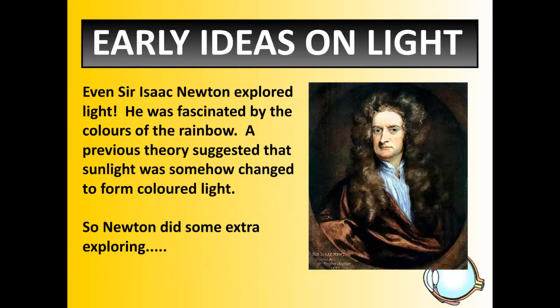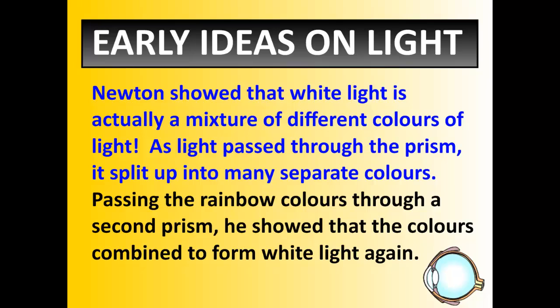Isaac Newton, another very famous scientist, dabbled a little bit with gravity but was also fascinated by the colors of a rainbow. There was a theory suggesting that sunlight was somehow a changed form of colored light. Newton, being the scientist that he was, looked at sunlight and thought — but it's white, so how is this color? The story is that light came through his wall and struck a piece of glass, projecting a rainbow on the bench or wall beside him, which got him thinking about how sunlight could contain all these different colors. He showed that white light is actually a mixture of different colors, which we see when we place a crystal or prism in front of light and it breaks up into a rainbow. Newton suggested that as light passed through the prism, it split up into many separate colors.